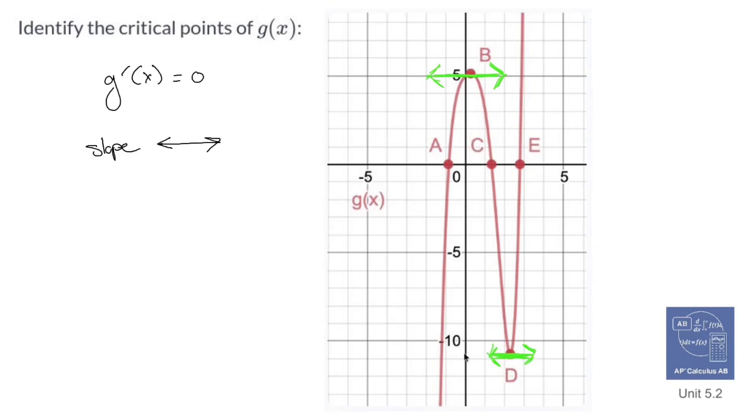Now, critical points indicate where a graph goes from increasing to decreasing. So it would make sense that a local maximum or a local minimum would give us our critical points. And that's what B and D give us in this case. So those are my critical points right there.